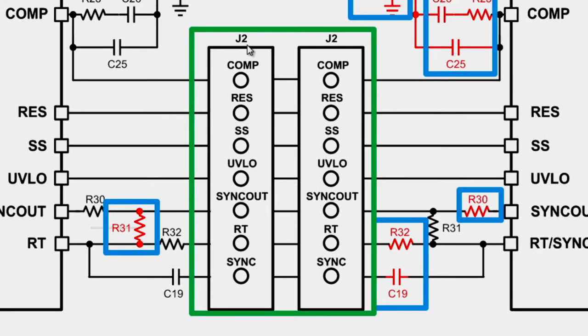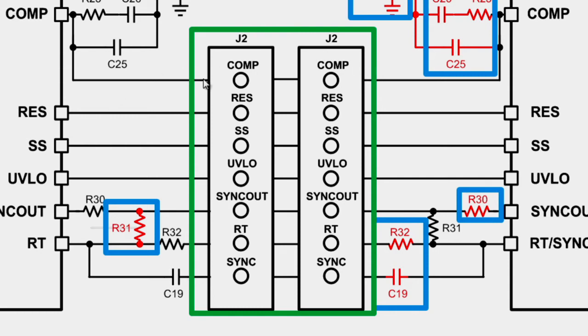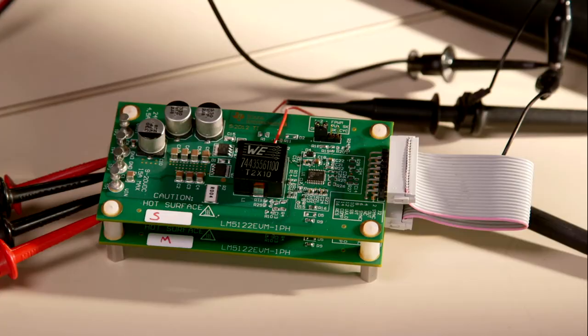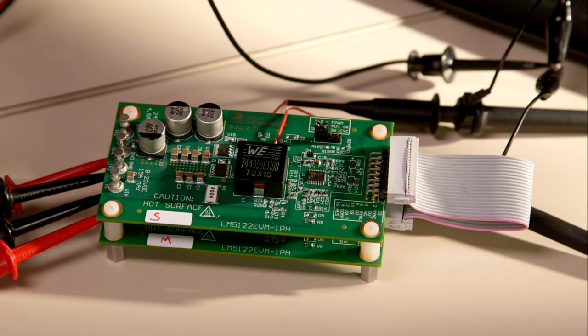The J2 connector is used to connect the common signals across the board. Moving to the bench, here I have two stacked one-phase evaluation boards.